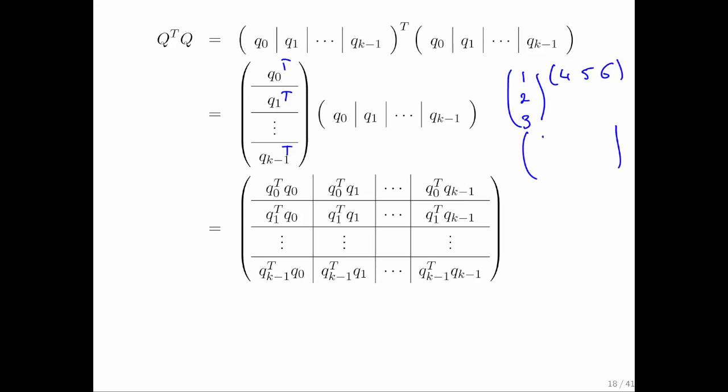where the first entry is just this entry times that. And then this entry is just this entry times that, etc. And if I mimic that right here, but with symbols,